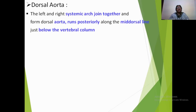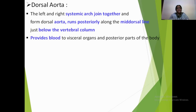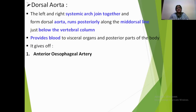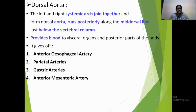The dorsal aorta is formed by joining of the left and right systemic arches, and it runs posteriorly along the mid-dorsal line just below the vertebral column of Calotes. It provides blood to visceral organs and the posterior part of the body. The dorsal aorta gives off: the anterior esophageal artery supplying the esophagus and associated structures; several paired parietal arteries supplying the parietal body wall; the gastric arteries supplying the stomach region; and the anterior mesenteric artery, which sends branches to the liver, spleen, body wall muscles, and digestive elements.